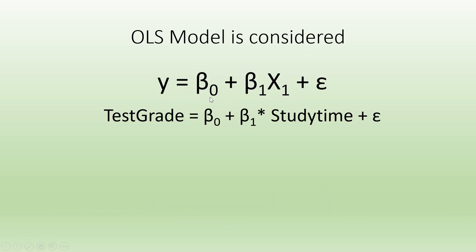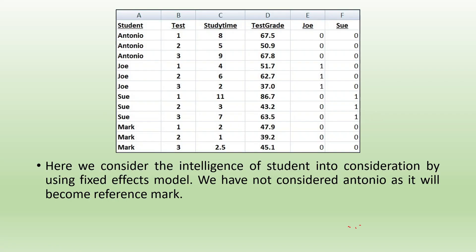You can see here: Y is equal to beta_0 plus beta_1 * X1 plus epsilon. My assumption is that the test grade is completely dependent on the study time. I am not considering the student's intelligence nor which test I am talking about. Now I want to introduce the effect of the intelligence of the student, so I will introduce dummy variables. I will create dummy variables for Joe and Sue as cross-section units — the presence of Joe or Sue is indicated by 1, and absence by 0.